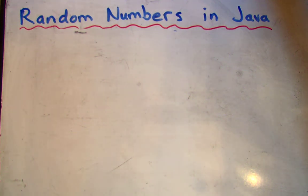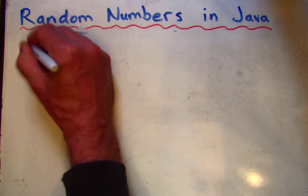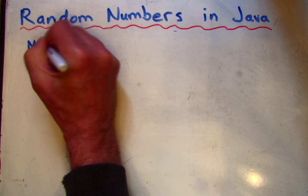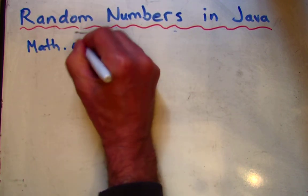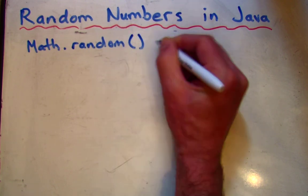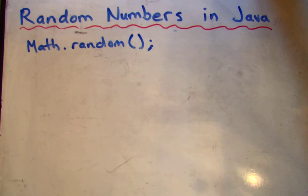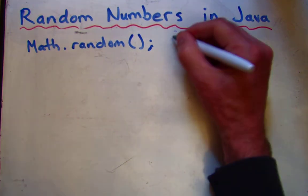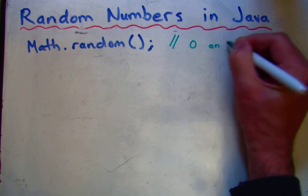Another way to generate random numbers in Java is to use the Math class. So if we use the Math class, we don't really have to import anything. We can just say Math.random. That's a method built into the Math class. And this, on its own, gives us a number between 0 and 1.